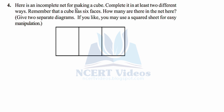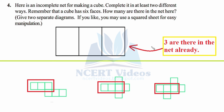Question four: here is an incomplete net for making a cube - complete it in at least two different ways. Remember that a cube has six faces. How many are already in the net? There are two separate diagrams. The answer is three - there are already three squares in the net. We have to complete it in at least two different ways, adding the remaining three squares. We have already seen various ways to complete a cube from a given net. A cube has six faces, and they can be arranged in different positions called nets.